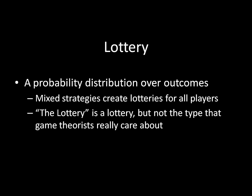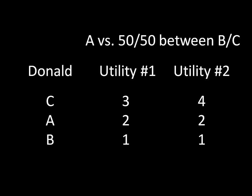But back to game theory lotteries. Why does this all matter? Well, think about these two different utility representations. And think about a choice for Donald that is A with certainty versus a 50-50 shot between B and C. For utility representation number one, what's happening here?